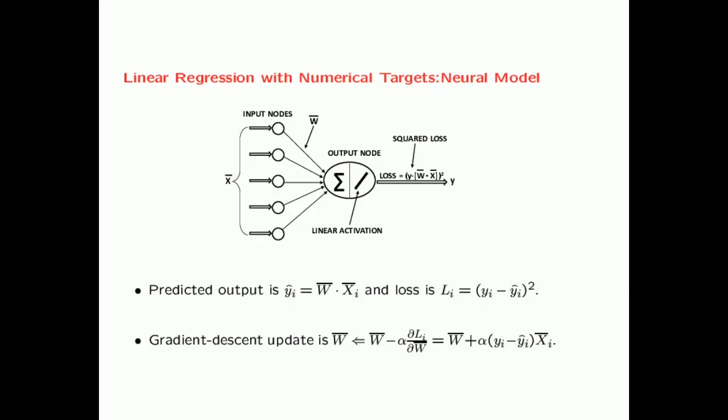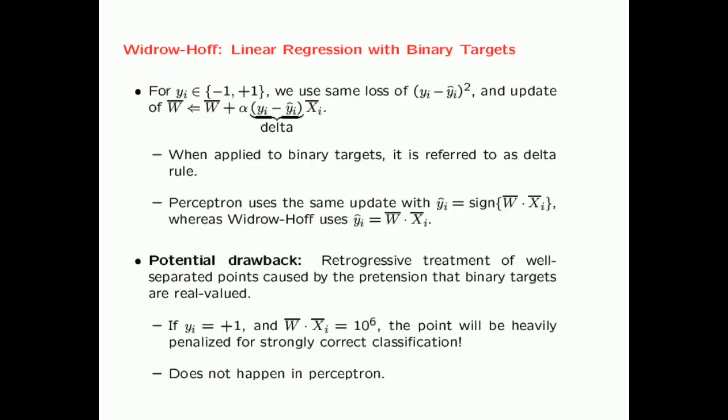On doing that, what you can easily show is that you multiply the difference between the observed yi and the predicted yi by the feature vector, then multiply by the learning rate and add it to the current weight vector. This difference between the observed yi and the predicted yi, when applied to binary targets, gives what is called the delta rule or Widrow-Hoff learning — performing linear regression while pretending that the binary targets are real-valued.